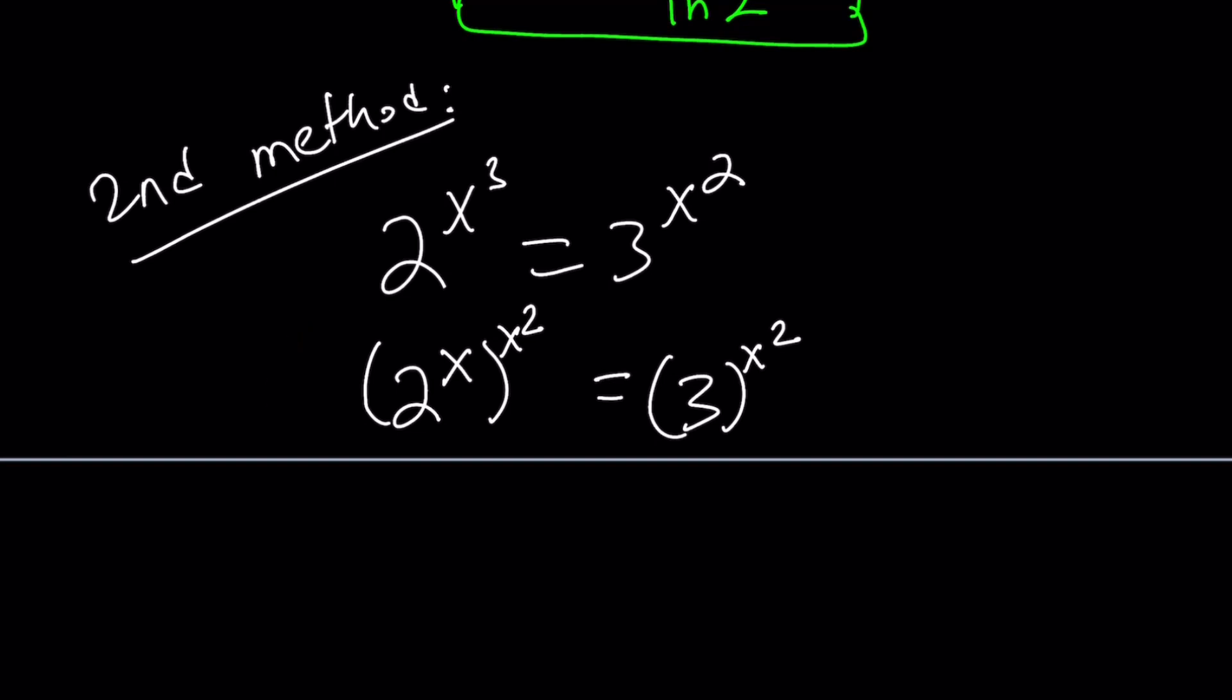If x is equal to 0, you're going to notice that 2 to the power 0 to the power 0, and 3 to the power 0, are both equal to 1. Therefore, they are equal. So x equals 0 is a valid solution.